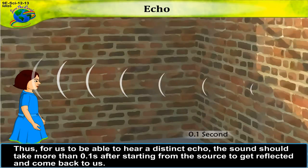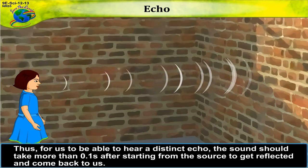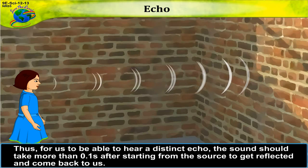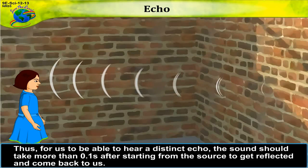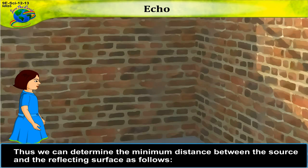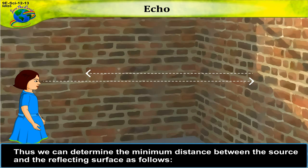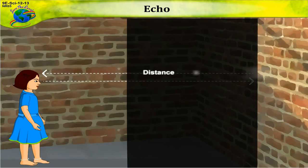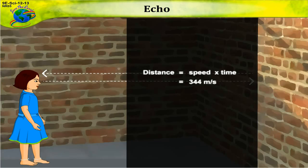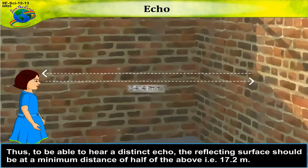Thus, for us to be able to hear a distinct echo, the sound should take more than 0.1 second after starting from the source to get reflected and come back to us. We can determine the minimum distance between the source and the reflecting surface as follows: distance is equal to speed multiplied by time. Substituting the values: distance equals 344 meters per second multiplied by 0.1 second, which equals 34.4 meters.